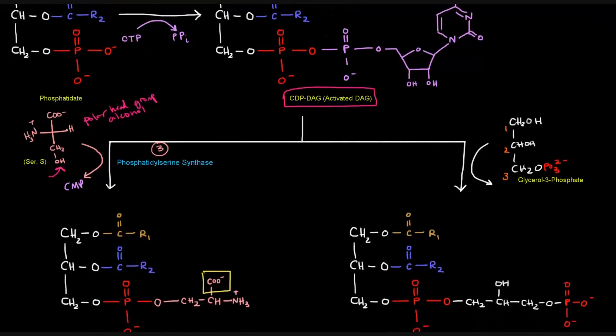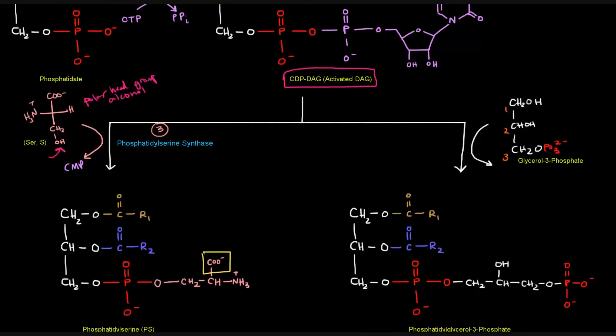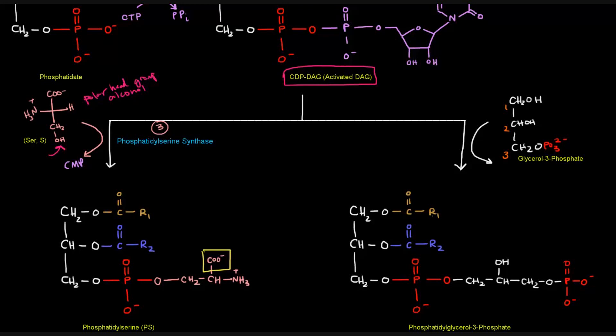which OH group is actually going to be the OH group that attaches to the red phosphate in the CDPDAG? Well, it's going to be the OH group on carbon number one. Why is that? Well, first of all,